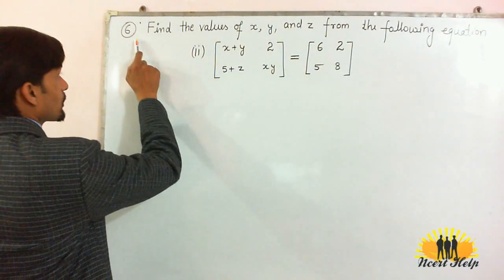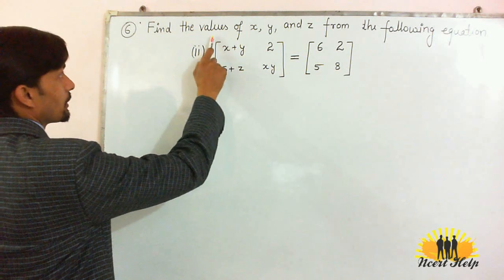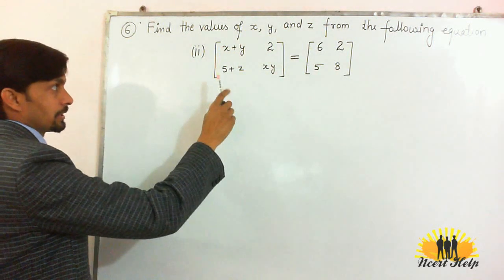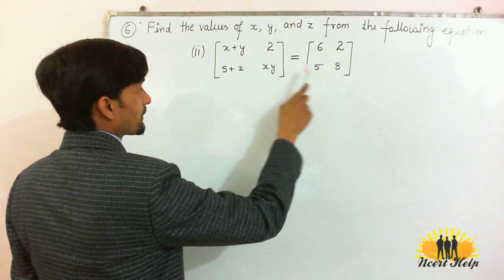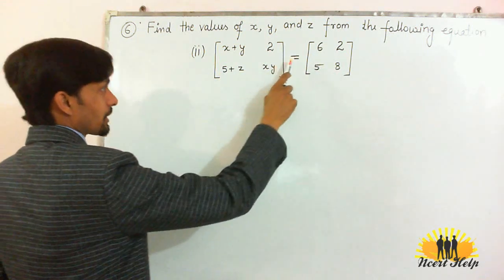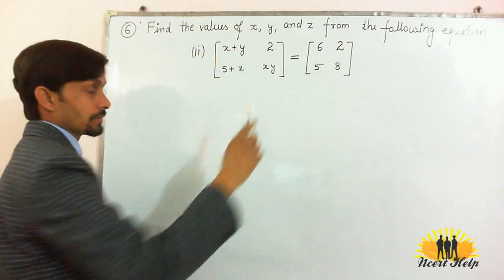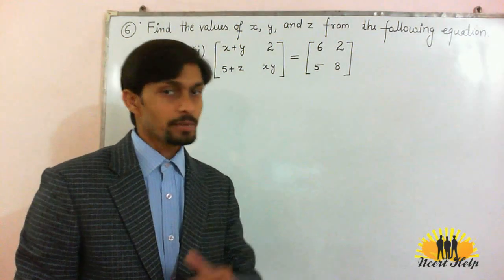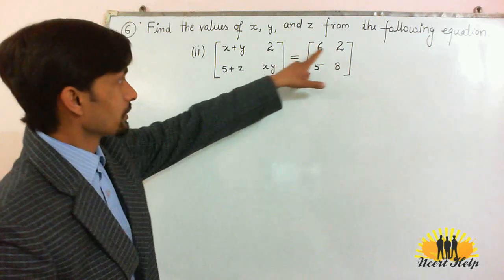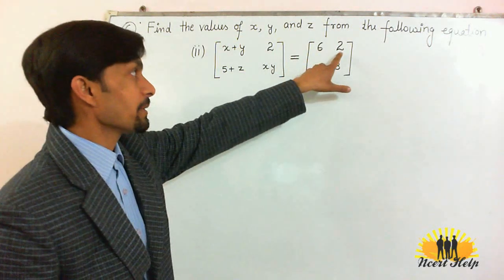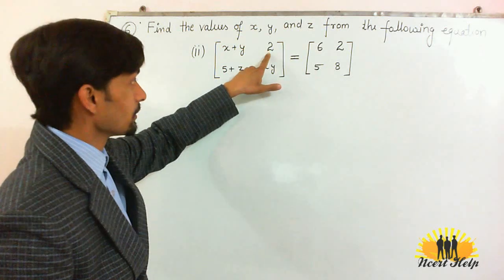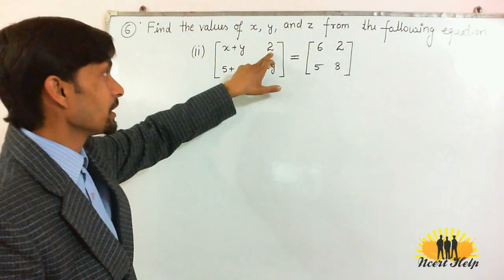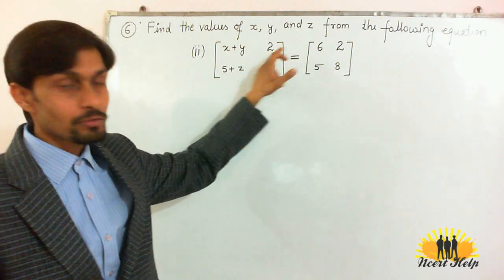Second part of question number 6: Find the values of x, y and z from the following equation. Here you can see two matrices are written which are equal. The concept is that two matrices are equal when their corresponding elements are equal. Like the second element of first row is 2, and here in both matrices we have the second element of first row is 2.